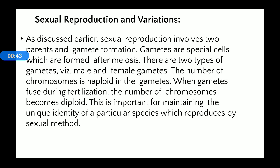Gametes are special cells formed after meiosis, and meiosis is the reductional division. There are two types of gametes: male gamete and female gamete. The number of chromosomes in a gamete is half that of the individual, meaning it is haploid. When male and female gametes fuse, the process is known as fertilization.